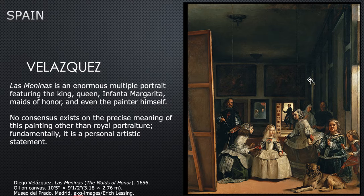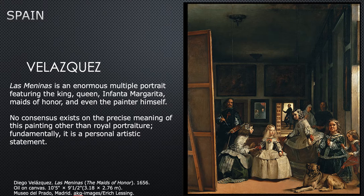Velázquez shows himself in the painting — apparently painting the very canvas we see — and then you start to get confused about what is real and what is not. One of the most delightful parts to me is the mirror in the background. Velázquez was painting this for the king and queen of Spain; as a little wink, he imagines them standing in front of this painting looking at their daughter, and as they look they can see themselves reflected in the mirror in the background. It's a little joke.